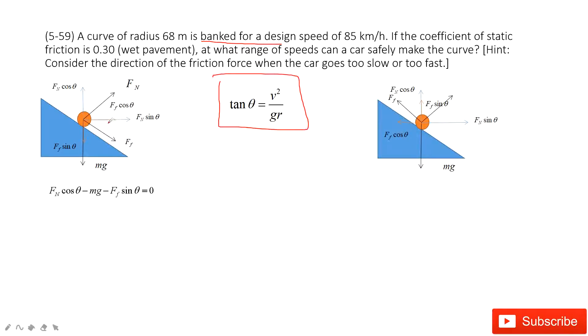Then we look at the central force. For central force, we have fn sine theta and friction times cosine theta equals the mass times the central acceleration. This central acceleration depends on v1 squared divided by r. v1 is the range, so one limit of the range. And then this friction is mu s times the normal force.